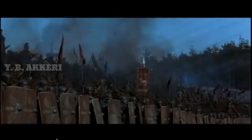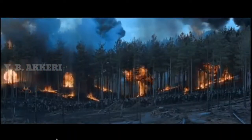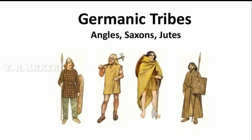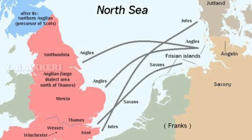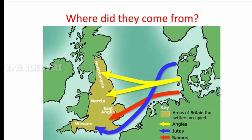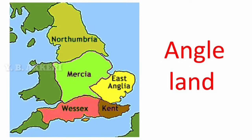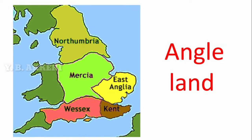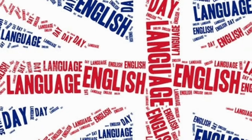The history of the English language really started with the arrival of three German tribes: the Angles, Saxons, and Jutes. These three tribes crossed the northern sea from what is today Denmark and northern Germany. The name England comes from the Angles — England means the land of Angles. And the Angles' language became English.